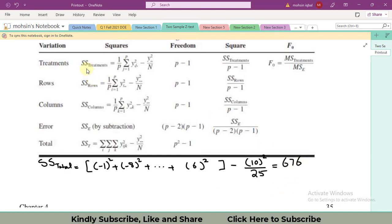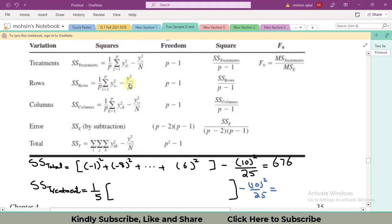Now I will do it for the sum of squares treatments. So for sum of the square treatment, t is equal to 5 and this term is same for all of them, 10 squared and 25. Let's go towards the data. There we have the sum of all five latents A, B, C, D, E. I mean five levels.